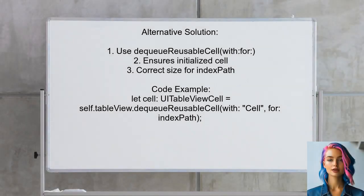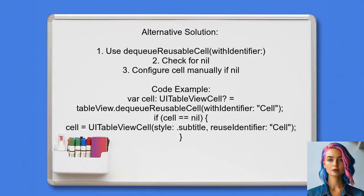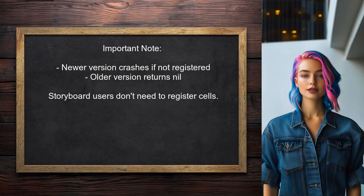Another user suggests using DQ Reusable Cell with the index path parameter. This method guarantees that you receive an initialized cell that is the correct size for the specified index path, allowing for proper layout within the content view. In contrast, if you use DQ Reusable Cell without the index path, you must check if the cell is nil and configure it yourself. It's important to note that in newer versions, using DQ Reusable Cell with index path will crash if the cell isn't registered, while the older method simply returns nil.